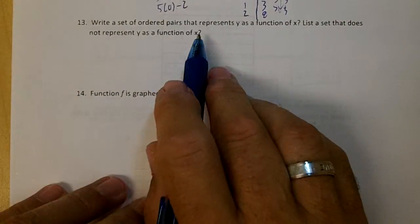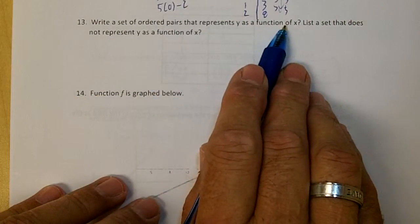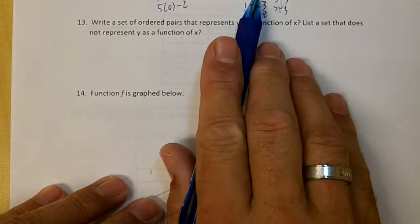Okay, number 13, write a set of ordered pairs that represents y as a function of x. We could use the ordered pairs from the above.